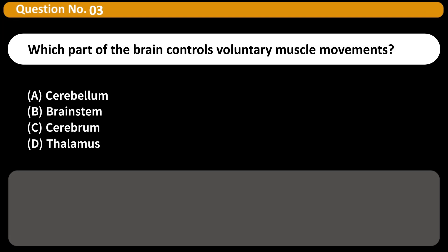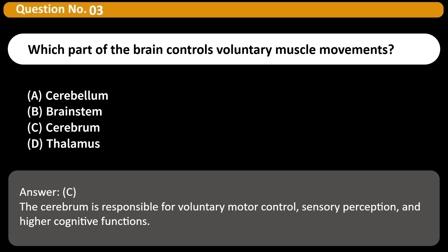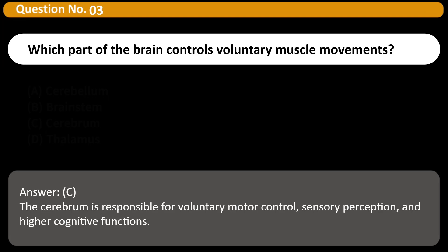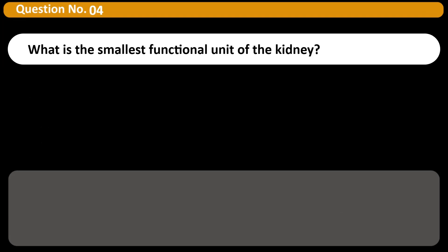Which part of the brain controls voluntary muscle movements? Answer: C. The cerebrum is responsible for voluntary motor control, sensory perception, and higher cognitive functions.